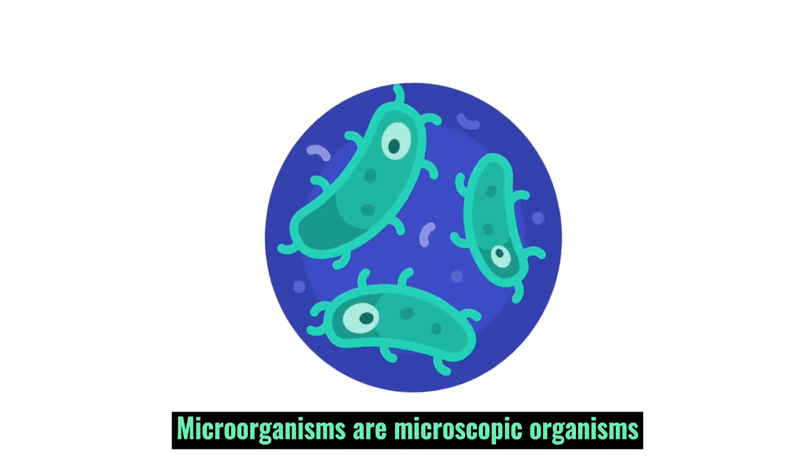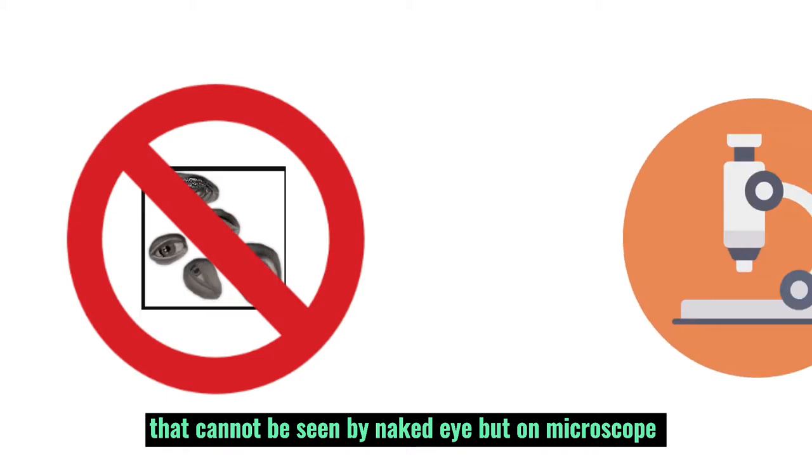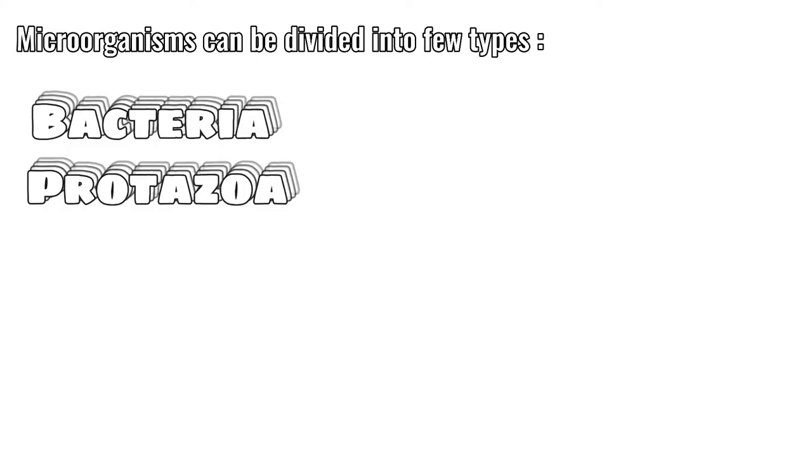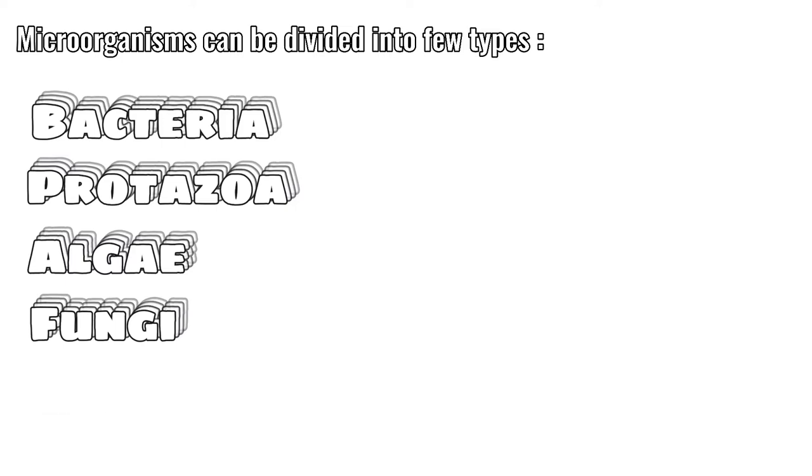Microorganisms are microscopic organisms that cannot be seen by the naked eye without a microscope. Microorganisms can be divided into few types: bacteria, protozoa, algae, fungi, and viruses.